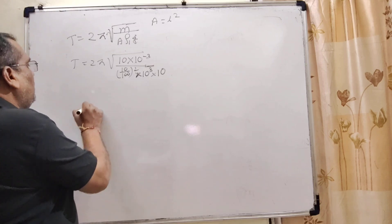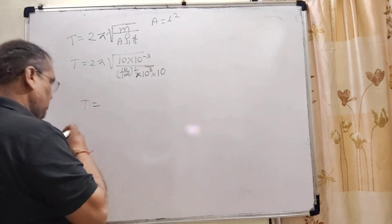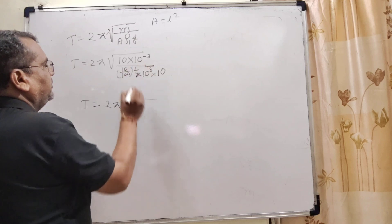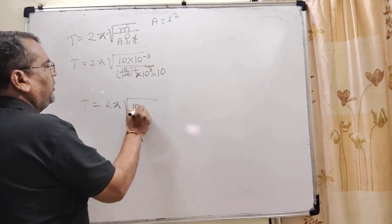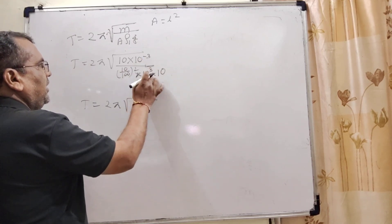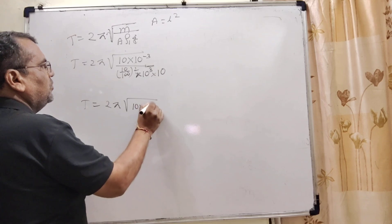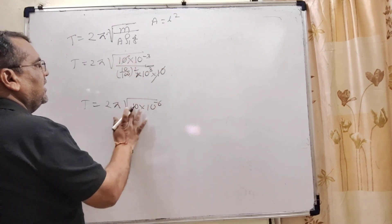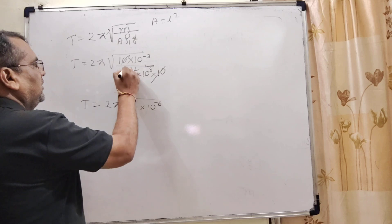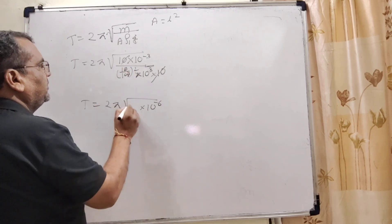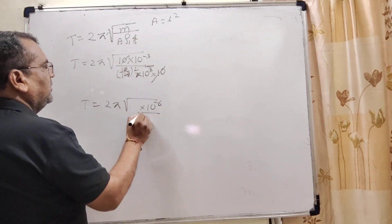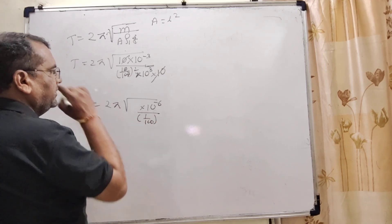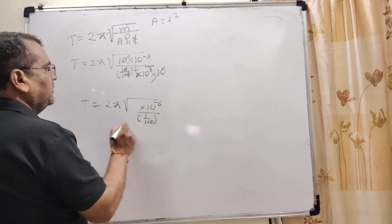Now solving: T = 2π√(10×10⁻³/(10×10⁻⁶)). This 10 and this 10 cancel out. So we get √(1/100).